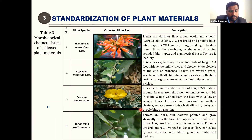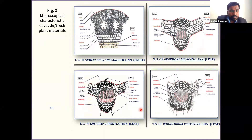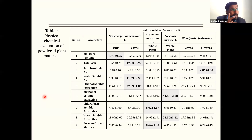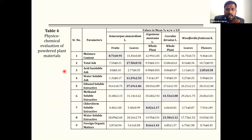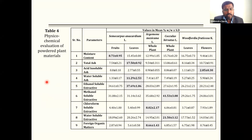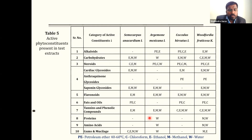Morphological and microscopic characterization was done, then plant materials were subjected to proximate analysis. Following Ayurvedic pharmacopoeia and herbal pharmacopoeia standard parameters, we evaluated moisture content, total ash, acid insoluble ash, water soluble ash, ethanol-soluble extractives, methanol-soluble extractives, extractive values, and foreign organic matter (FOM). Plant materials were also subjected to phytochemical analysis to confirm presence of active secondary metabolites, which are responsible for therapeutic efficacy.